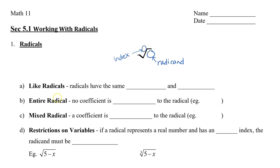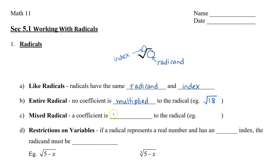Now taking a look at some definitions, the first one here is like radicals. Like radicals are radicals that have the same radicand and index. An entire radical is a radical with no coefficient that is multiplied to the radical. So an example of an entire radical would be the square root of 18 — there is no number multiplied in the front or in the back. A mixed radical is where there is a coefficient multiplied to the radical, so an example would be 3 times the square root of 2.